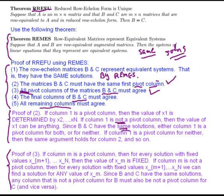We're using the fact that B and C must have the same set of solutions - any solution of B must be a solution of C and vice versa. So we've gone through steps 2 and 3. Let's go to step 4: the proof that the final columns of B and C must agree. We've already established that they have the same pivot columns.